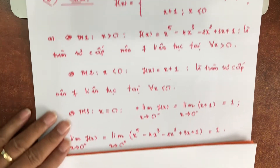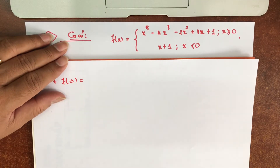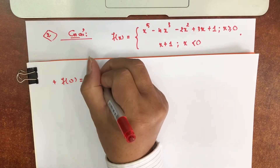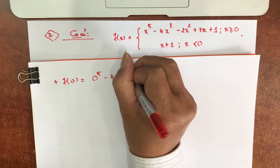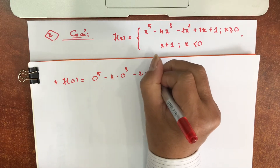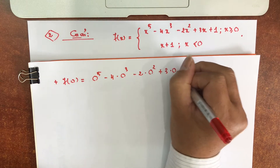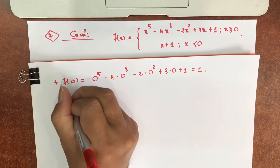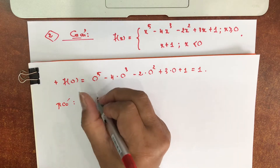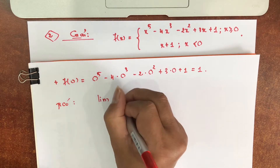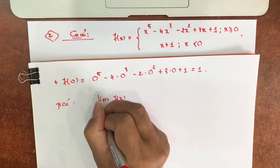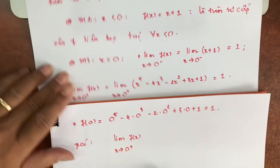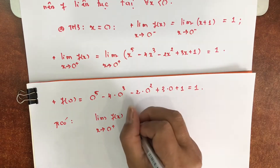Theo đề bài các anh chị thấy là mình lấy nhánh thứ nhất. Thay F(x) bằng 0 vào cái nhánh thứ nhất: 0⁵ − 4·0³ − 2·0² + 3·0 + 1, rõ ràng bằng 1. Ta có giới hạn của F(x) khi x tiến về 0 cộng là bằng 1.